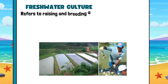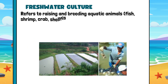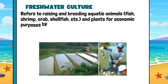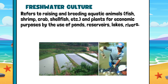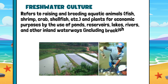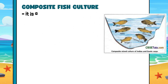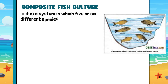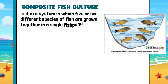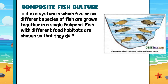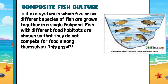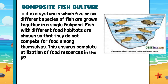Freshwater culture refers to the raising and breeding of aquatic animals such as fish, shrimp, crab, and shellfish, as well as aquatic plants for economic purposes. It uses ponds, reservoirs, lakes, rivers, and other inland waterways including brackish water, which play an important role in the aquaculture industry. Composite fish culture is a system in which five or six different species of fish are grown together in a single fish pond. Fish with different food habits are chosen so that they do not compete for food among themselves, ensuring complete utilization of food resources in the pond.